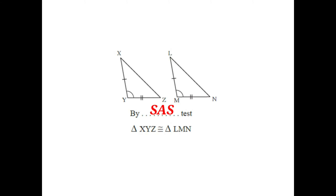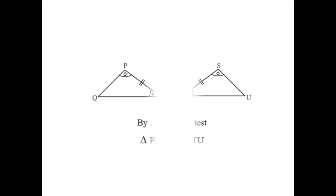For the next example, triangles PQR and STU — two angles and the side between them are congruent with the corresponding two angles and the included side of the other triangle. Therefore these two triangles are congruent by the ASA test.